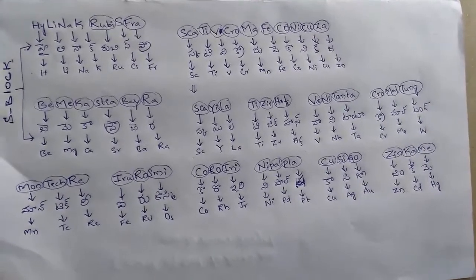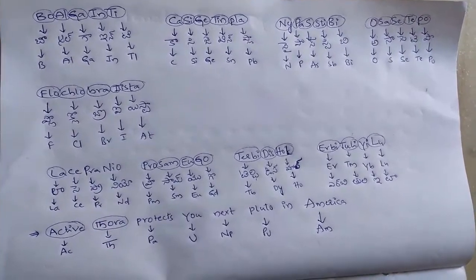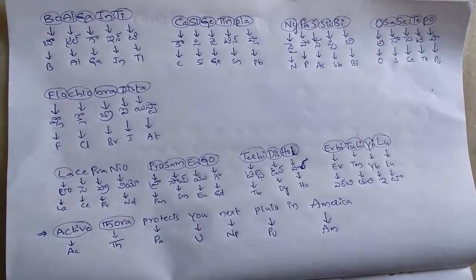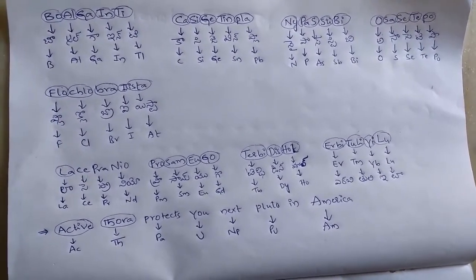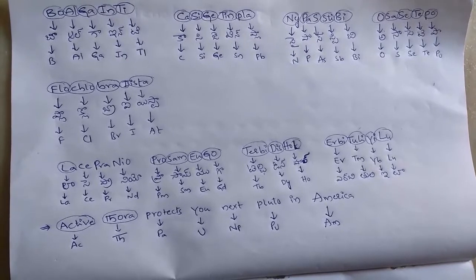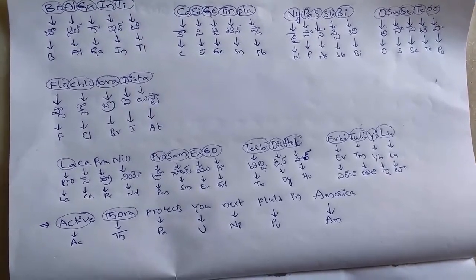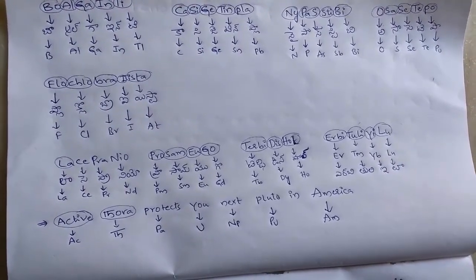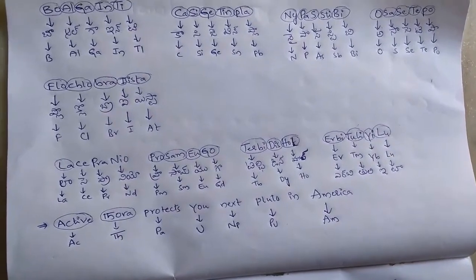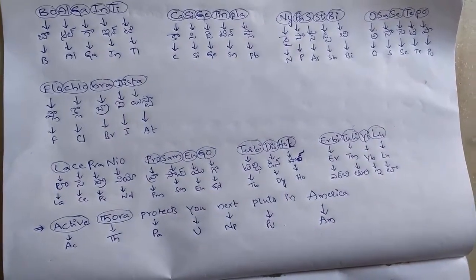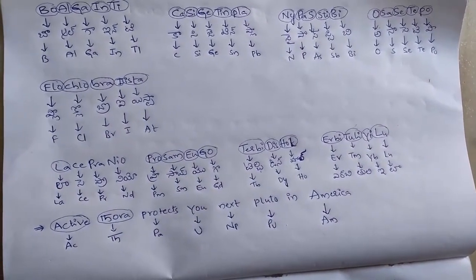Next, P-block elements. Boalga Inti. Once again, Boron group: Boalga Inti. Bo means boron, Al means aluminum, Ga means gallium, Inti means thallium. Boalga Inti.